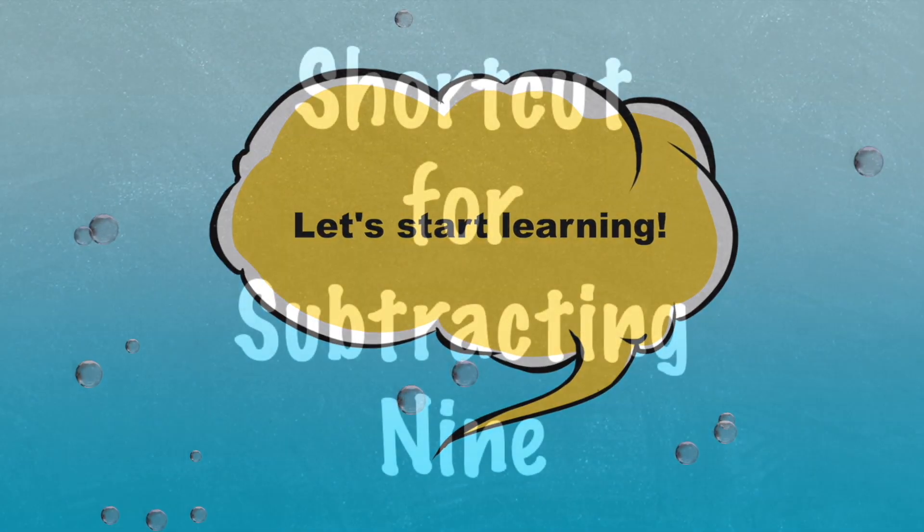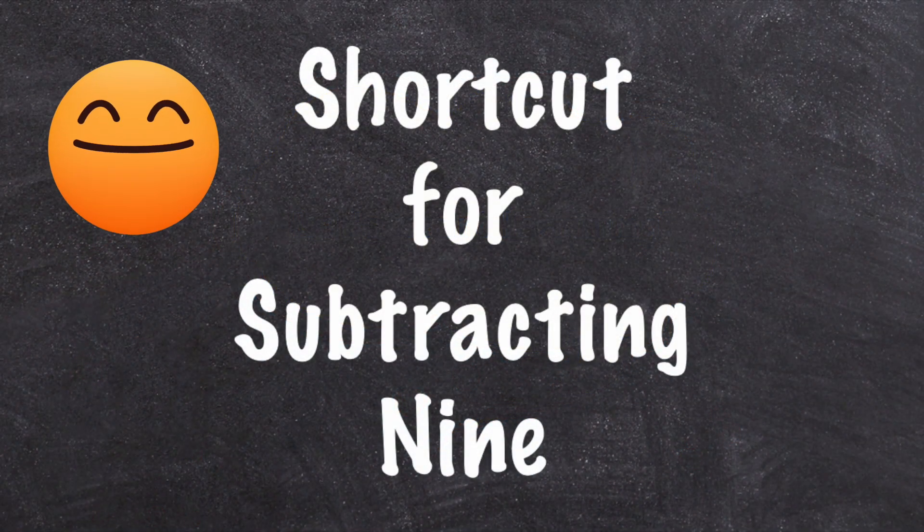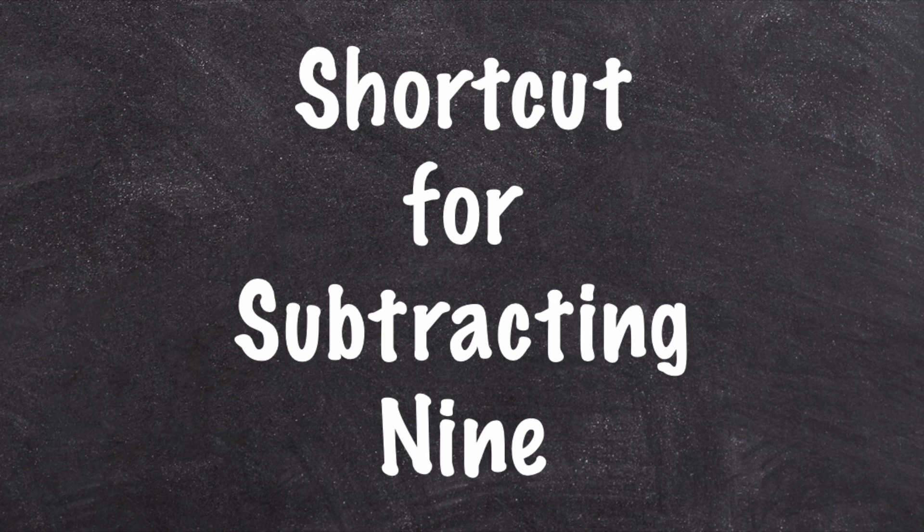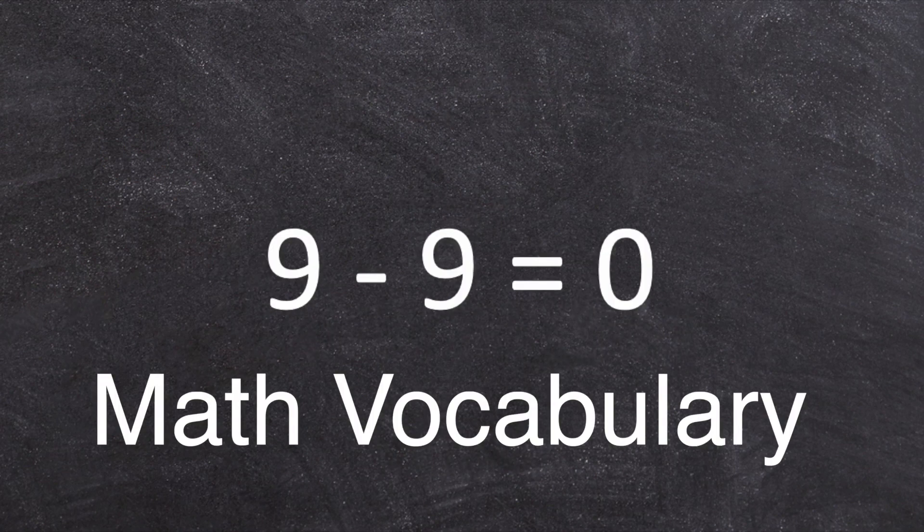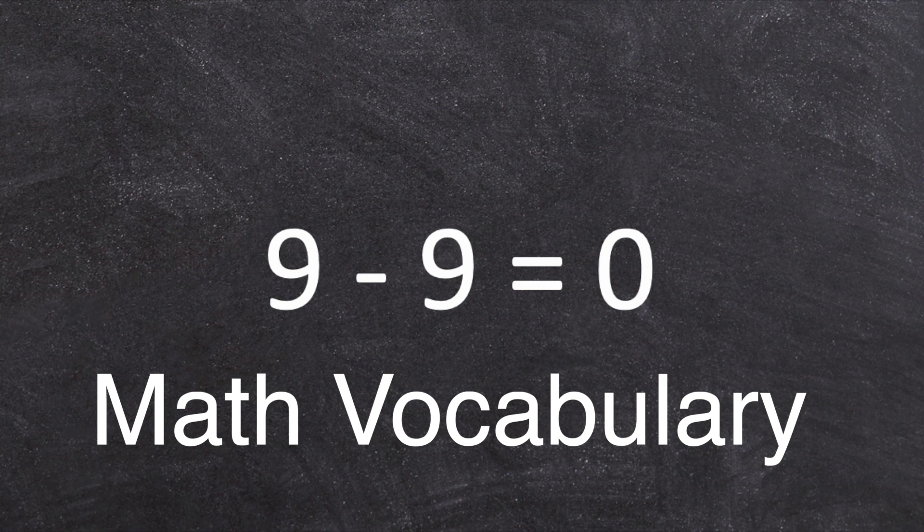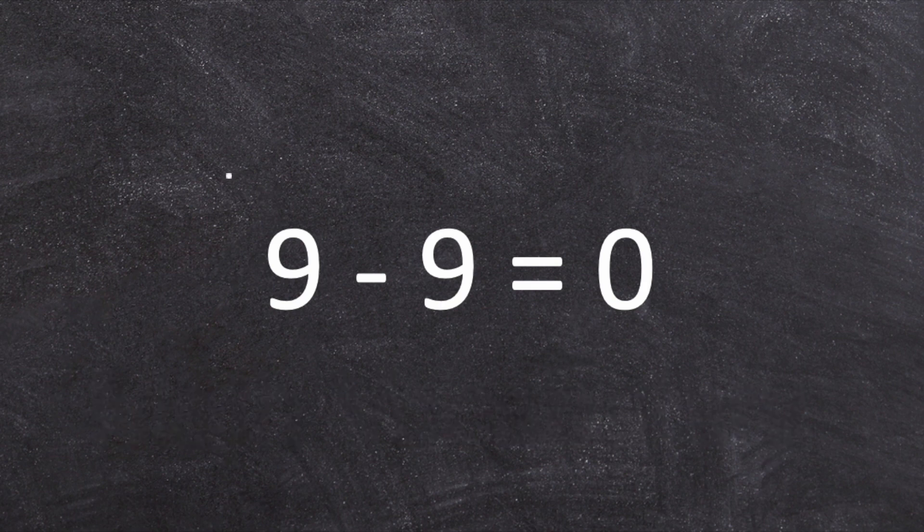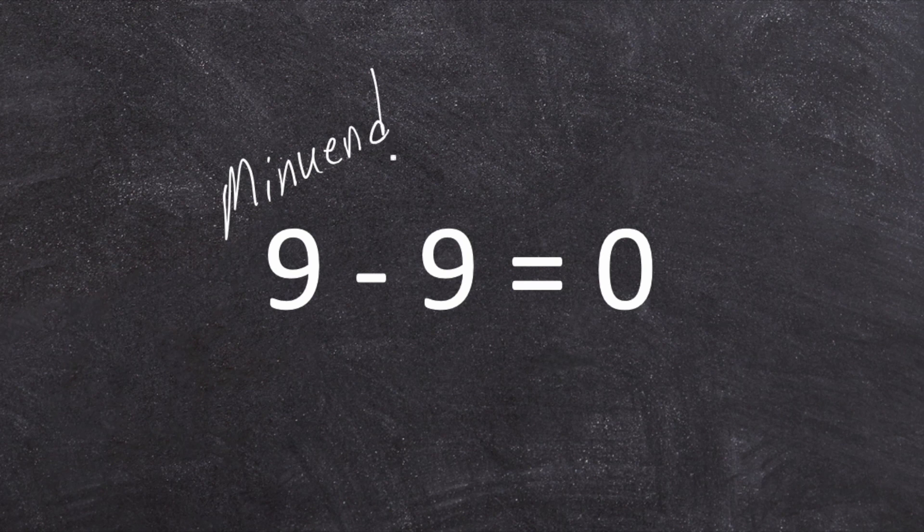Let's start learning. Hello everybody, today we're going to look at a shortcut for subtracting nine. Before we do, let's go over a little math vocabulary. When we have a subtraction number sentence, we have names for our numbers. For example, the number we're subtracting from is called the minuend.